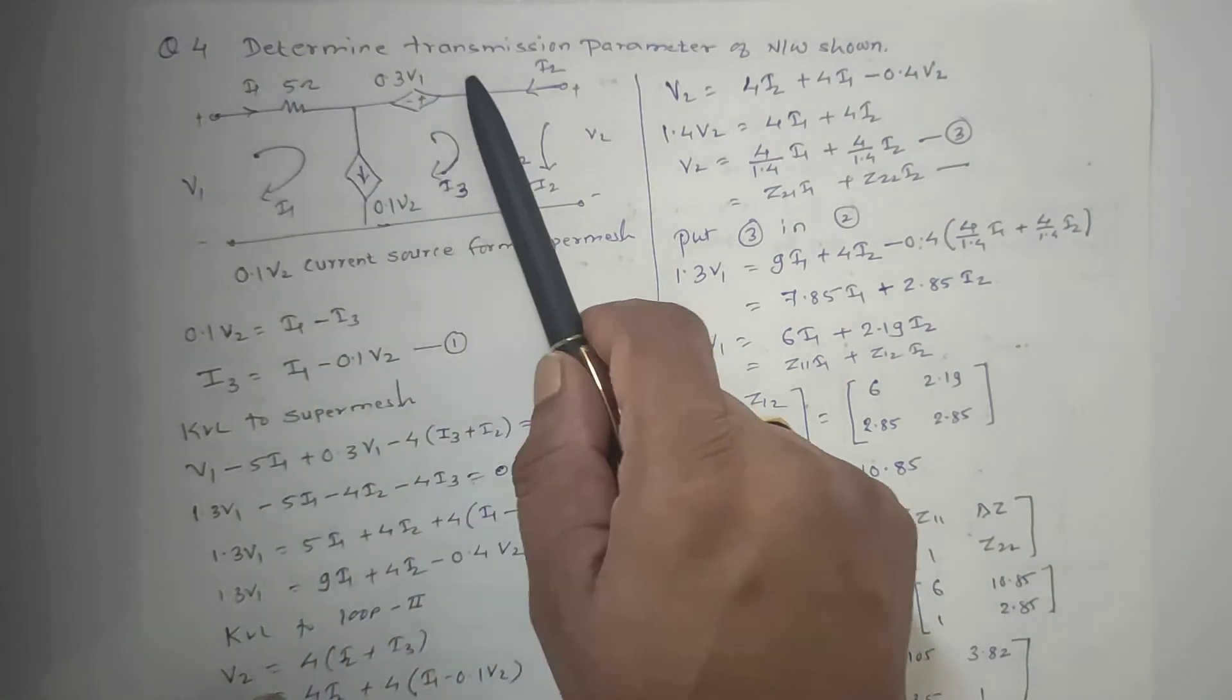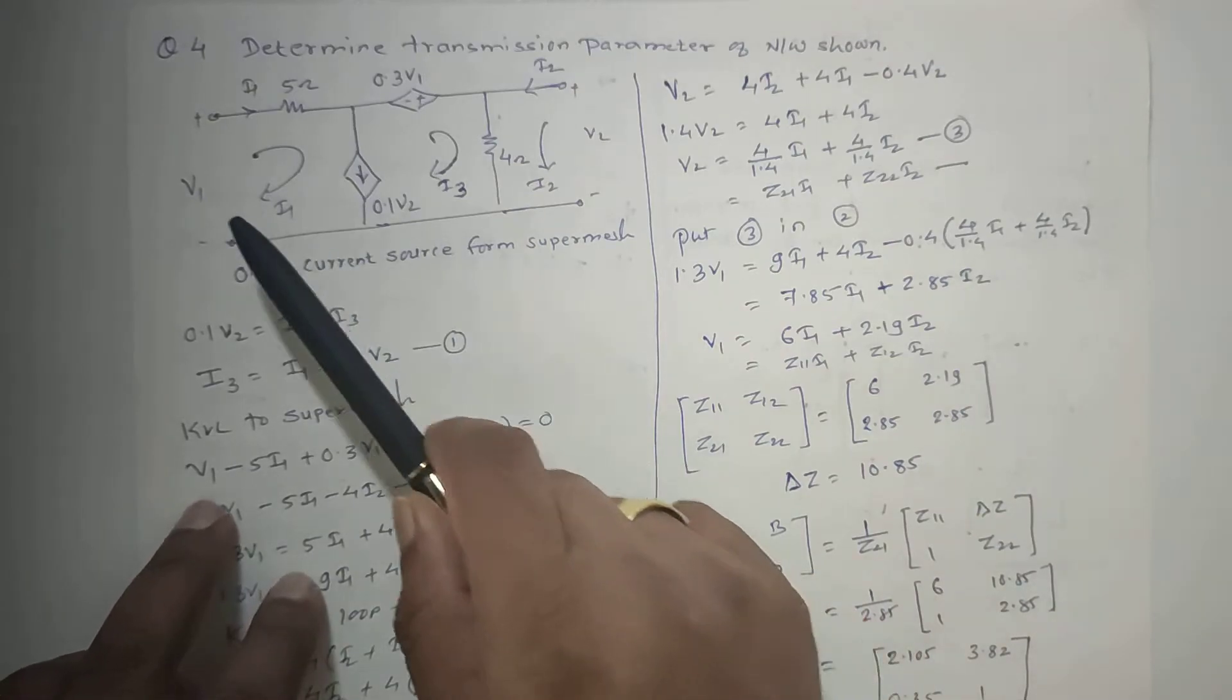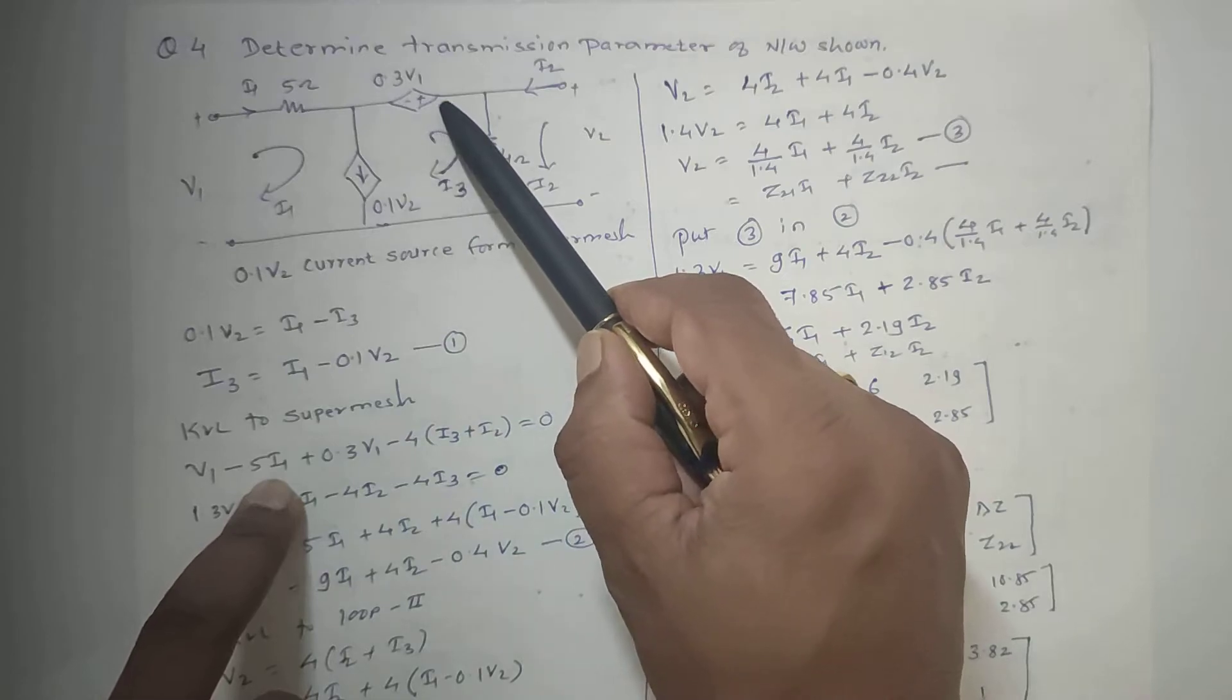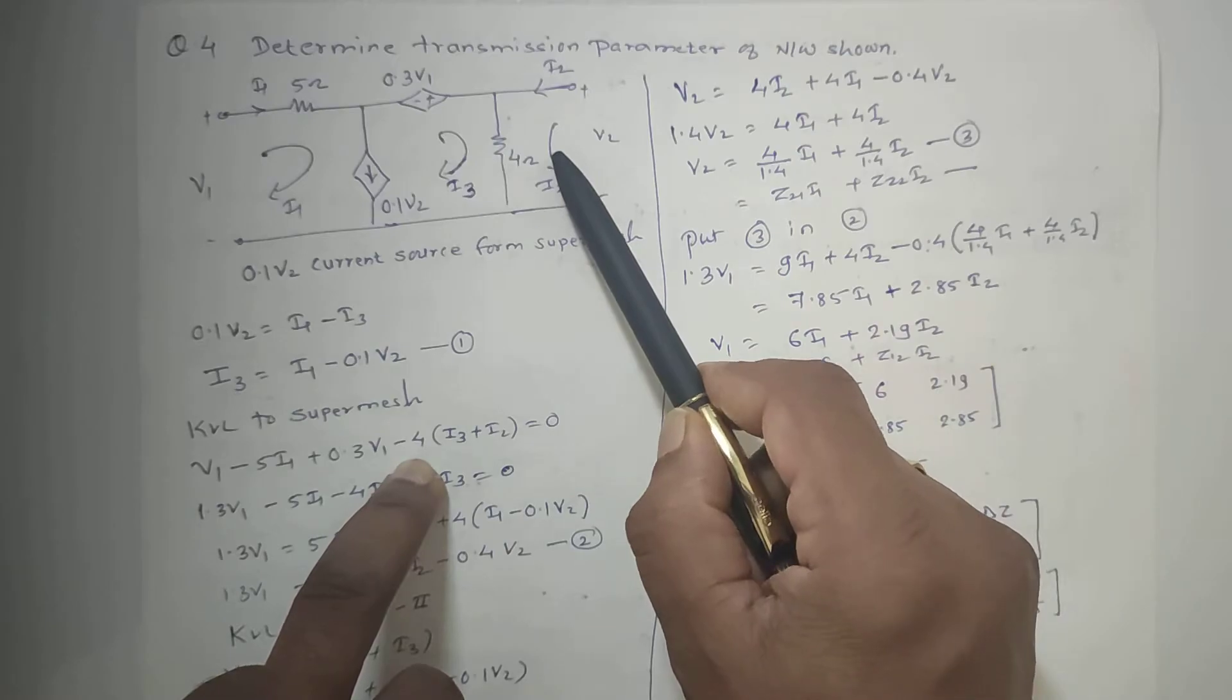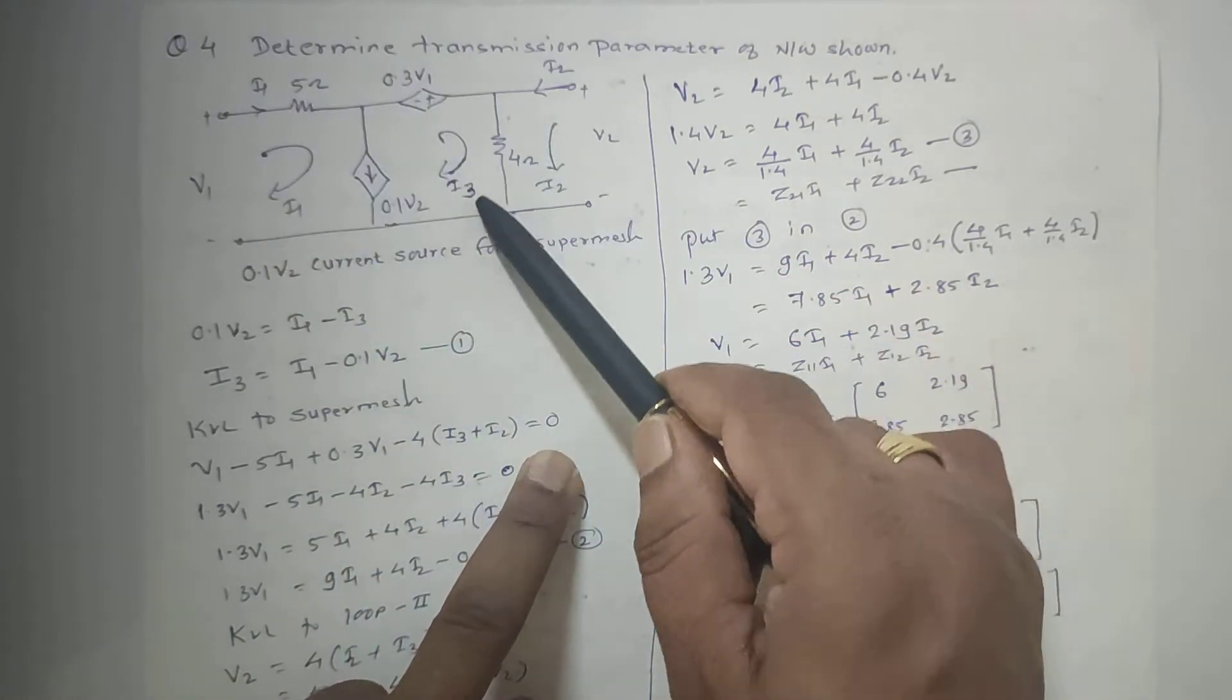We will apply KVL to the super mesh: V1 minus 5I1 plus 0.3V1 minus 4I3 plus I2 equals 0. This is KVL to super mesh. Then we will simplify this. V1 plus 0.3V1 becomes 1.3V1.